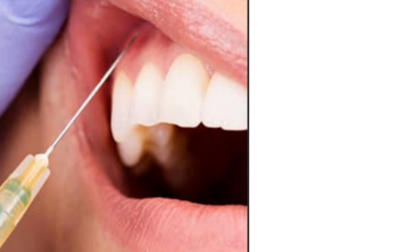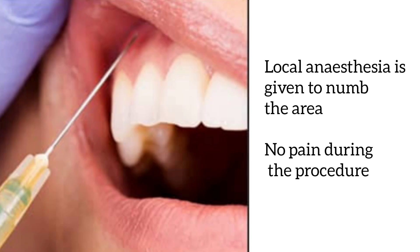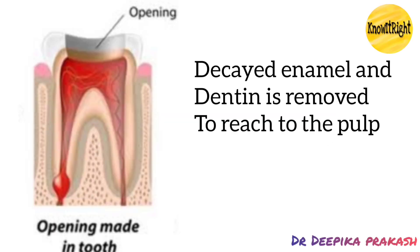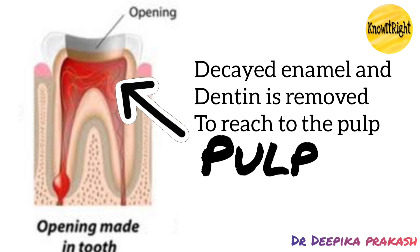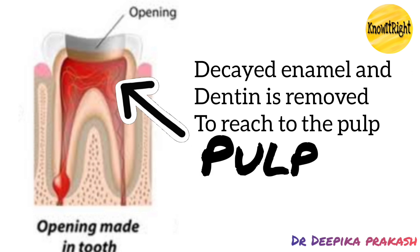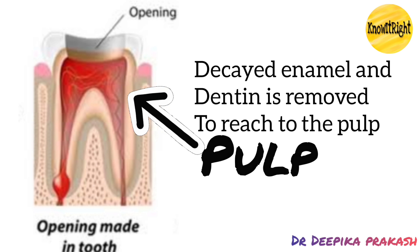First, an injection is given to numb the area so that during the procedure you don't feel any pain. Then the upper layer — that is the enamel and the dentin — is drilled and the decayed portion of the tooth is removed to reach the pulp, that is the nerve inside the tooth.